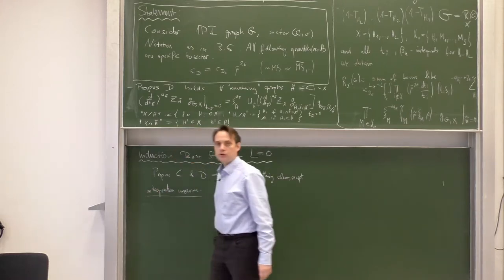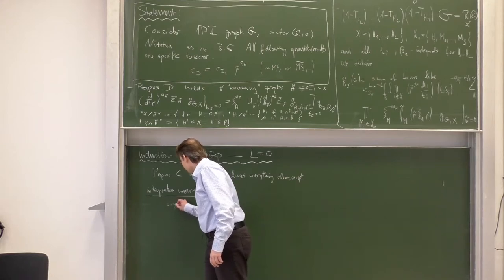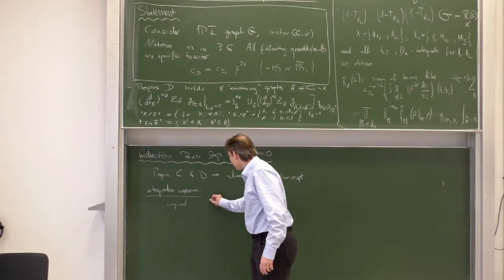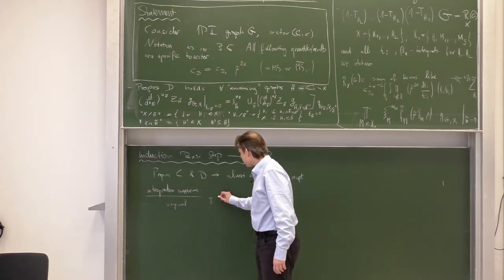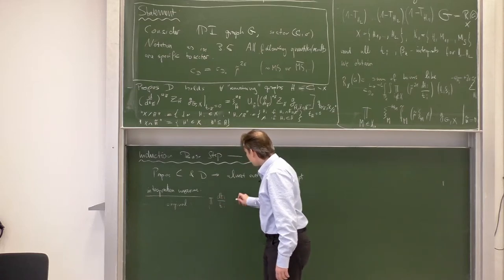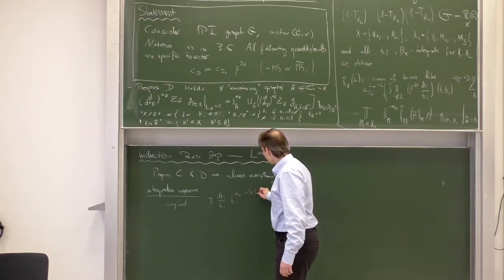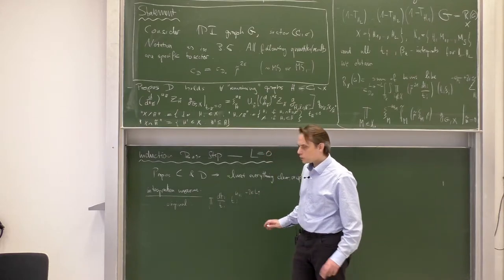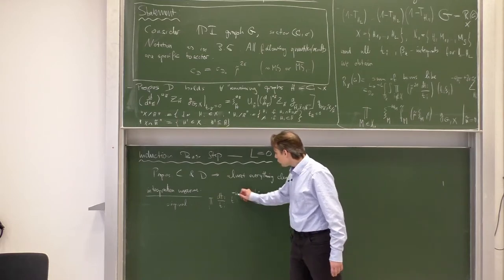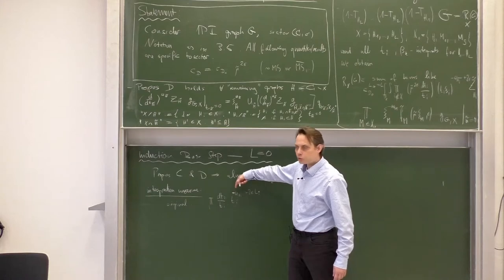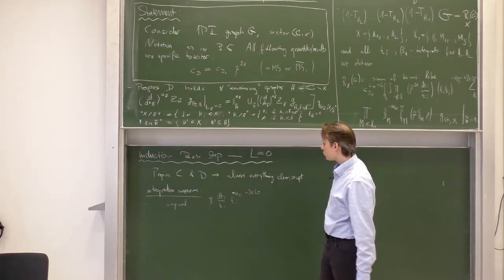The only detail we need to look at is the integration measure. The original measure can be put into the following form: a product over all t variables, all the subgraphs in our forest i, and then d(t_i)/t_i times t_i to the power omega_{H_i} (without bar) plus 2 epsilon times the number of loops in the respective subgraph. Previously we wrote explicitly the number of loops, number of lines, and numerator degree, but these can obviously be combined to exactly this expression.